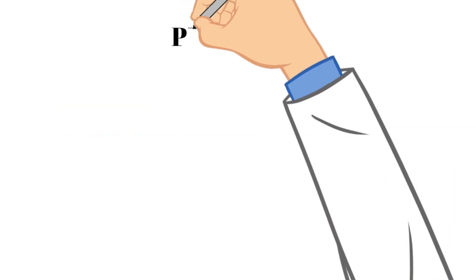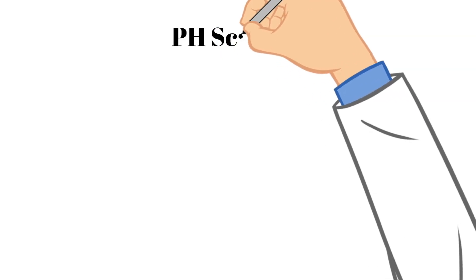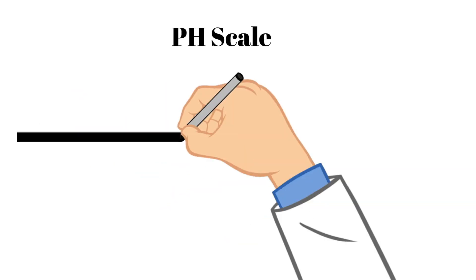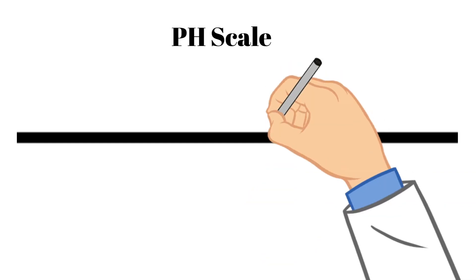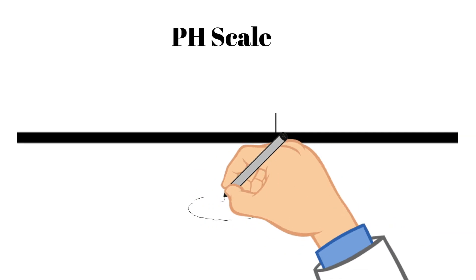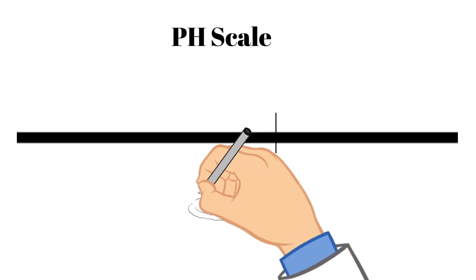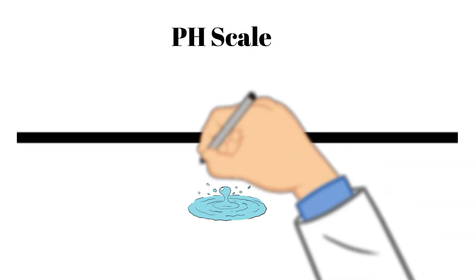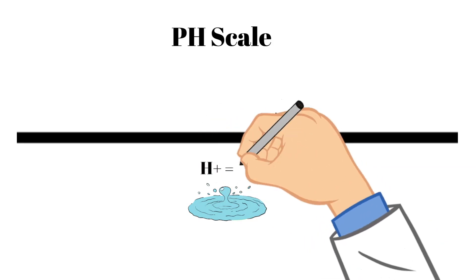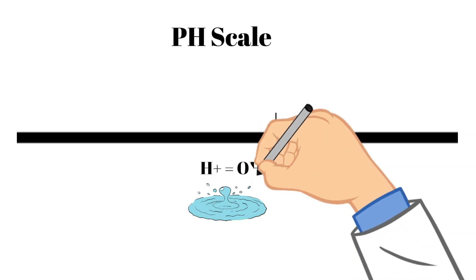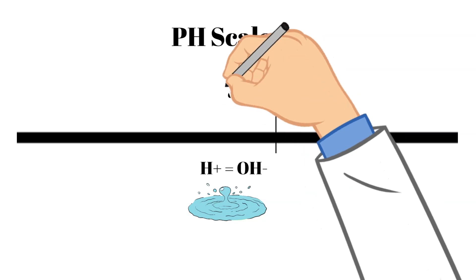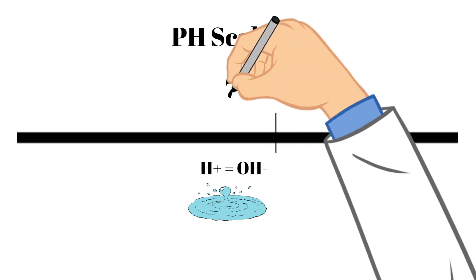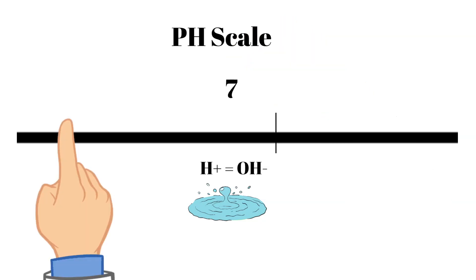Now let's talk about the pH scale. You may have heard of this term before, and it simply tells you how acidic or basic a substance is. This scale ranges from zero all the way up to 14. And it determines how many hydrogen ions are in a solution. So let's look right in the middle at a pH of seven. When a substance has a pH of seven, that means it has an equal number of hydrogen and hydroxide ions. And pure distilled water is here at a pH of seven, meaning it's neutral.